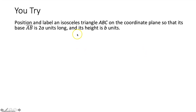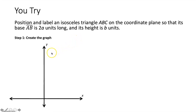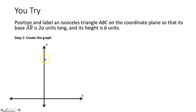Now we do the same thing with an isosceles triangle. It has a base of segment AB that is two A units long, and its height is B units. First, create the graph with a set of axes. Notice the axes are arranged a little differently this time because we're dealing with an isosceles triangle — we want it to be congruent on both sides, so we have it straddling the Y axis.